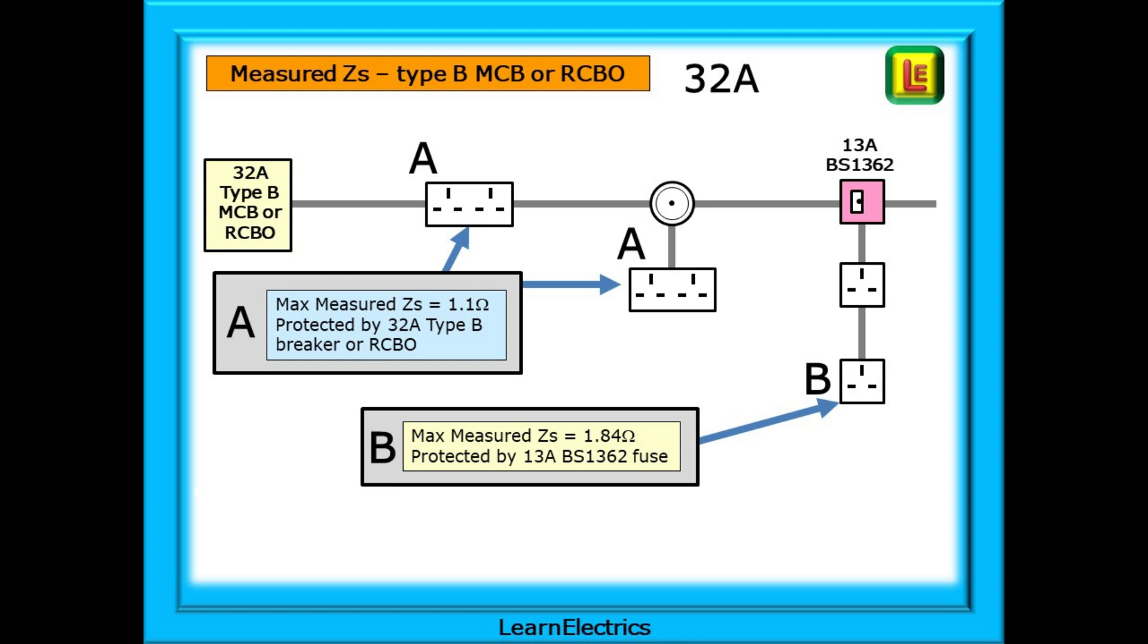However, at point B, we have two sockets that are protected by an FCU with the 13 amp BS 1362 fuse installed. The furthest socket on this spur will therefore have a maximum permissible measured ZS of 1.84 ohms. The 1.84 ohms for ZS only applies to the socket on the fused spur at point B.